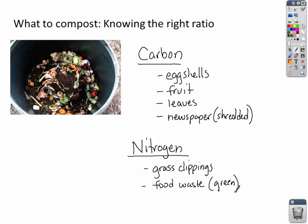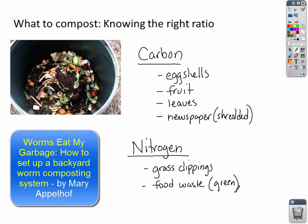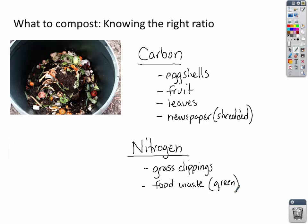For more information, there's tremendous amount of information online. There's a book written in the 1980s called Worms Eat My Garbage that really inspired a lot of people to try backyard composting and started a revolution in this activity. That's a quick overview so you get a better idea of what to compost, and the right ratio is the most important thing to make this system work.